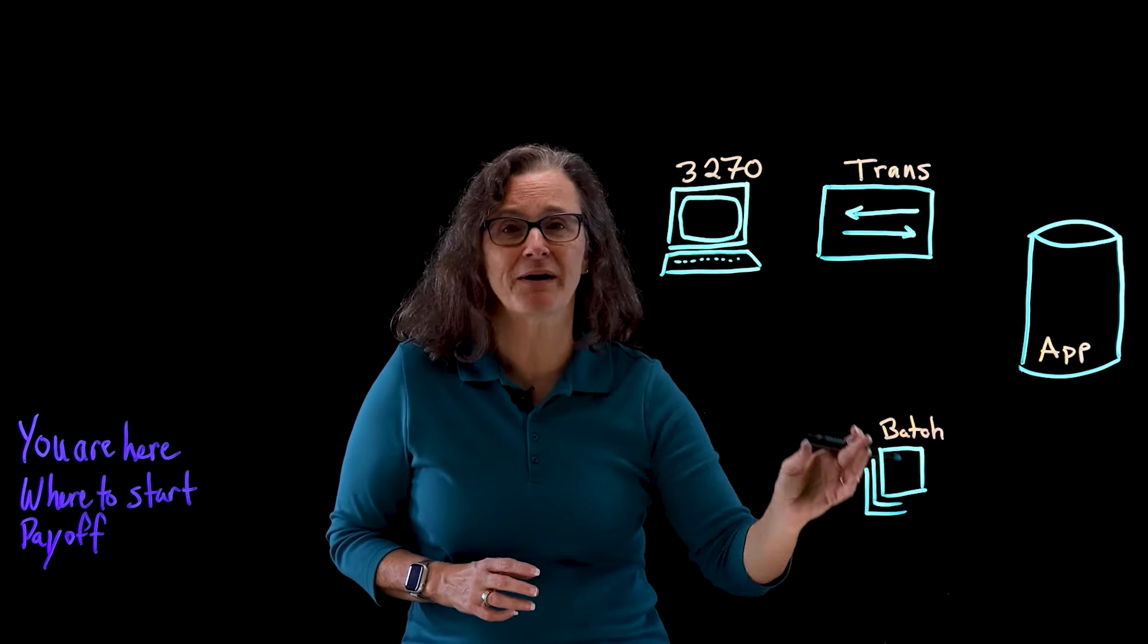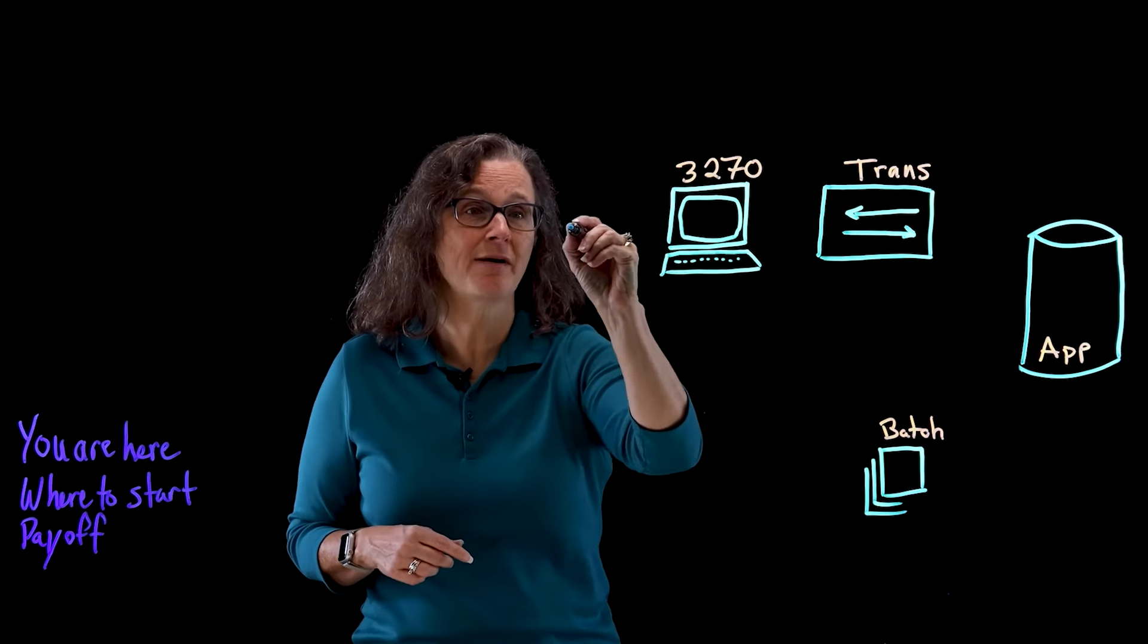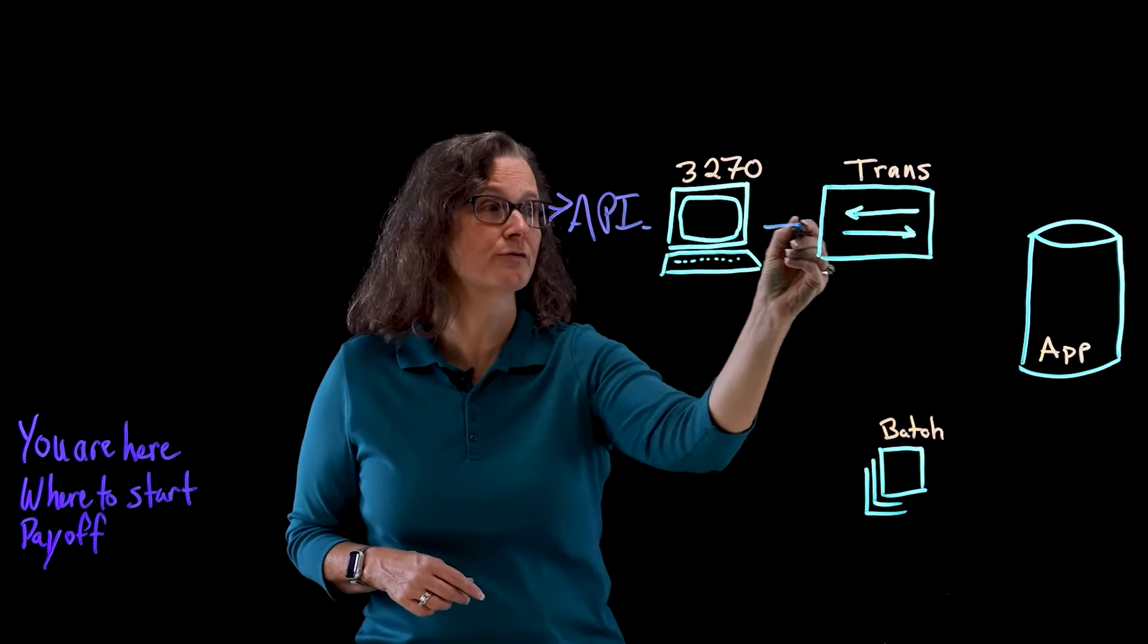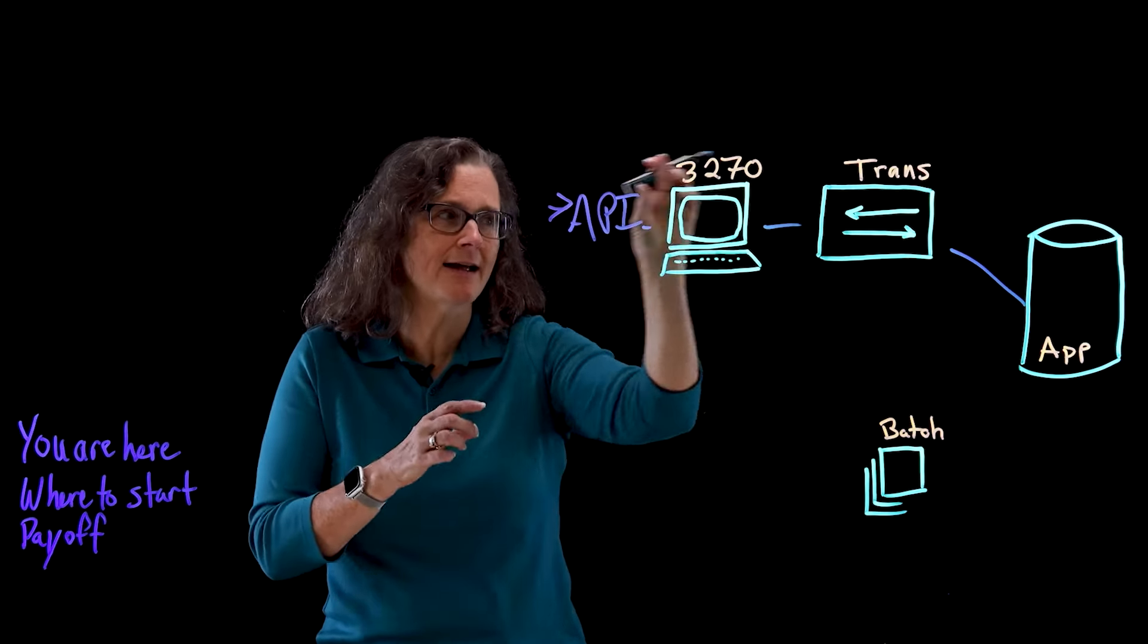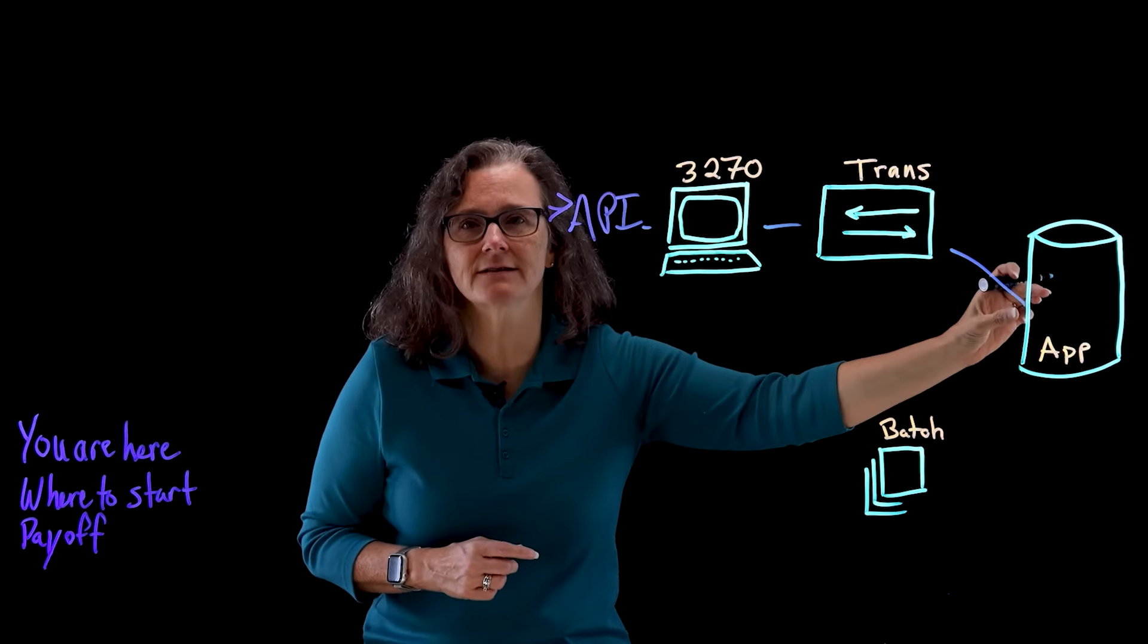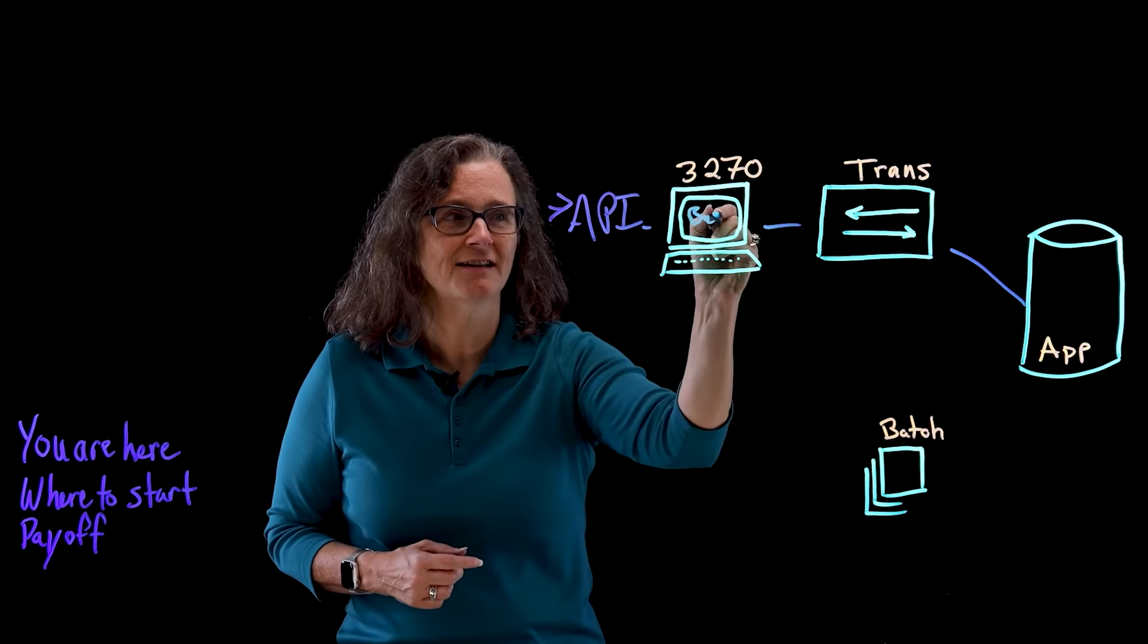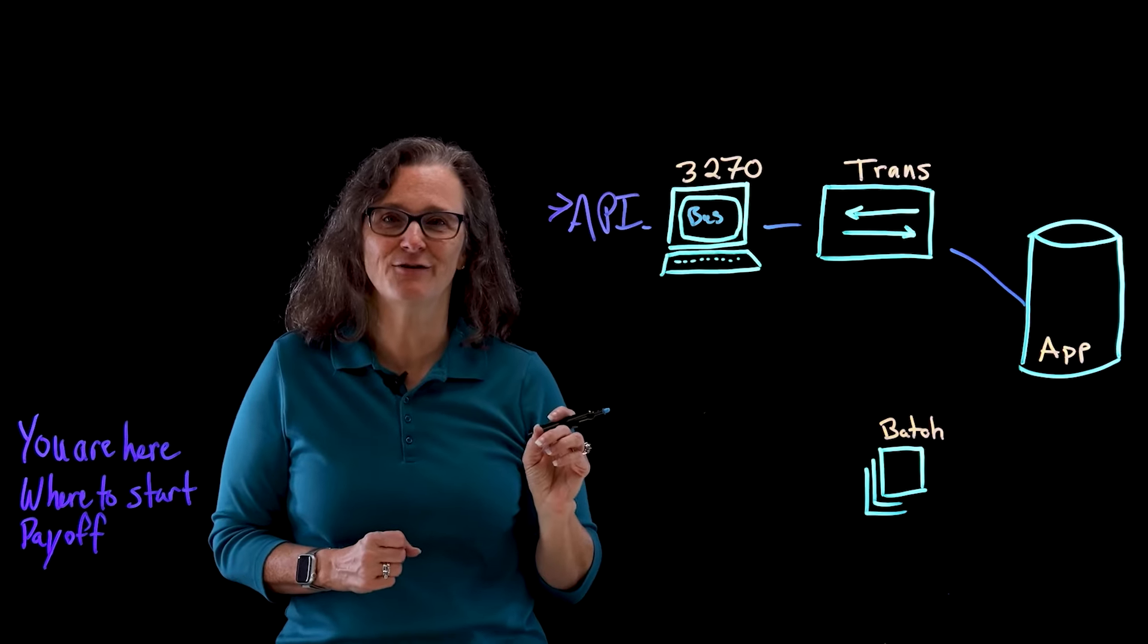And then you have a set of batch processes as well. So today, you may have put an API here, and you may be using that API to go through this process to get to this function. But that API is dependent on all of this logic and all of this code, because you have business logic hidden in these transactions, in this 3270 interface.